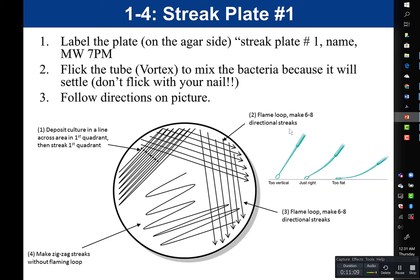After picking up the broth on your loop, draw one line down — this occupies about a quarter to a third of the plate. Then go side to side, back and forth, filling in that entire area to create what's called a lawn. You want that area so filled in that you don't see any individual colonies — just a big mat of bacteria in that quadrant. One line down, then zigzag side to side, going up and down.